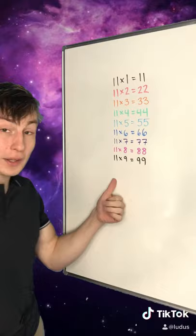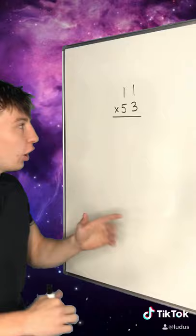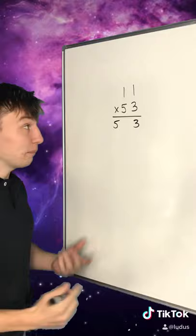Say we wanted to multiply 11 by 53. All we have to do is split this 53 apart. We'll put the 5 here and the 3 here. The number that goes in between them is the 5 plus the 3, so it's 8, and 11 times 53 is indeed 583.